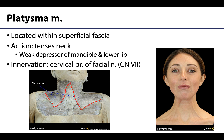We will talk about the majority of the muscles of facial expression in the face session. The platysma muscle develops embryologically together with the muscles of facial expression in the second pharyngeal arch. Because of this similar embryological development, these muscles share motor innervation from the facial nerve, also known as cranial nerve 7. Specifically, the cervical branch of the facial nerve is what innervates the platysma muscle.